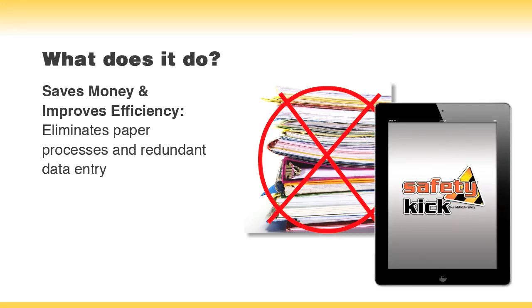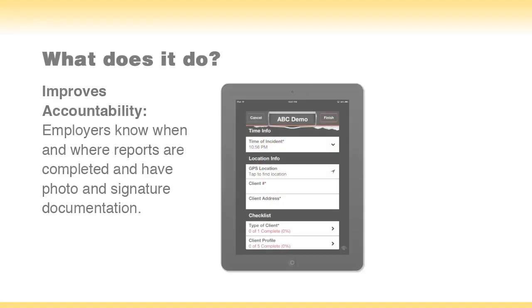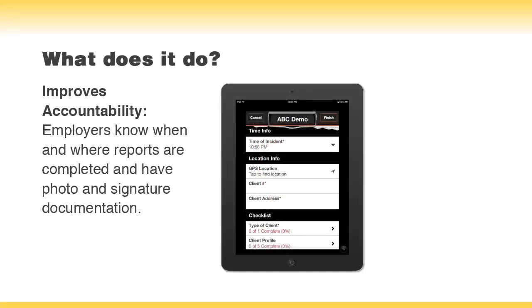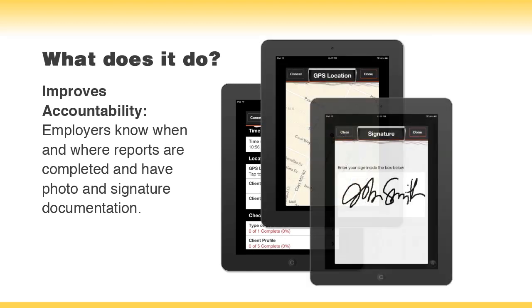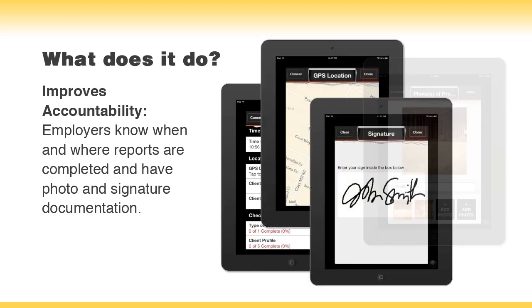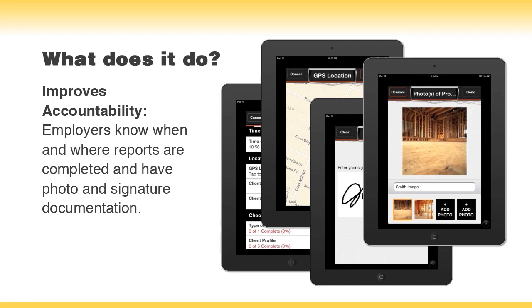Employees enter data on their mobile device once and it is in electronic form from then on. All Safety Kick reports can include time of completion, a GPS tag, and an on-screen signature. You can also add up to four photographs.